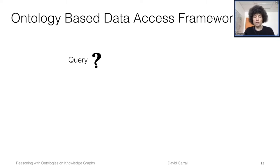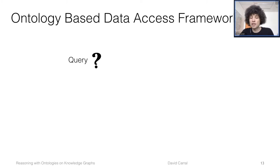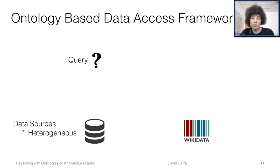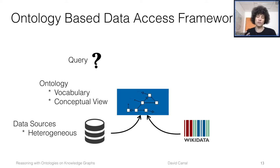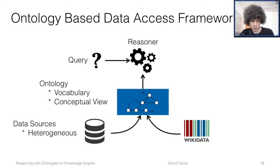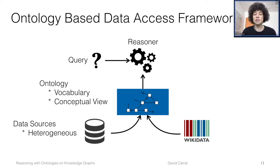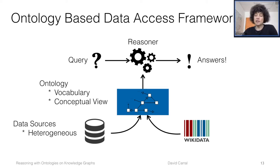But sometimes this is not enough. Sometimes we need to integrate information across different resources to really obtain the information we're looking for. To address this situation, I'm going to talk about the ontology-based data access framework, or OBDA. The idea is that we have a query and some data sources, and we create an ontology which provides a shared vocabulary and a conceptual view, allowing us to integrate the information. Ontologies here are equipped with formal semantics enabling the use of reasoning, which allows us to integrate information, produce more information, and hopefully get the answers we're looking for.